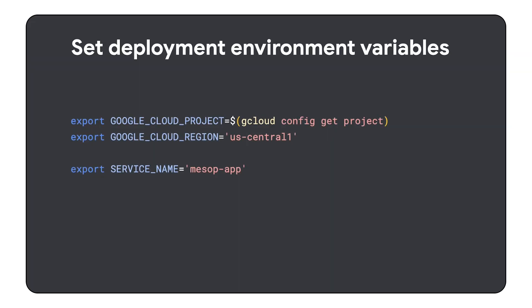Once you feel confident with your local version and have made the necessary changes, it's time to build and deploy our application. The first thing to do is to set an additional environment variable needed for the deployment to work successfully. You should already have Google Cloud project and Google Cloud region set from the previous exercise. Now you just need to set the service name — it is the name used to identify your new service in Cloud Run. I used mesop-app in this example.